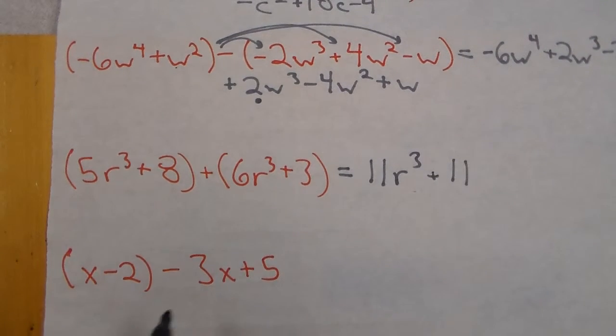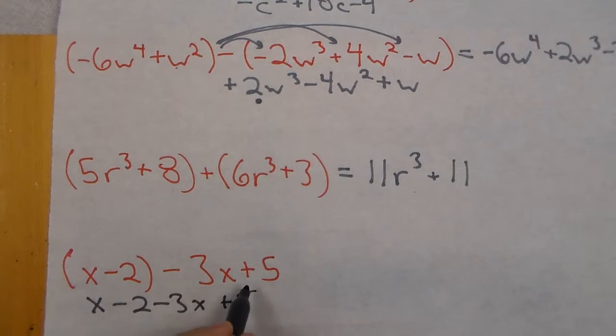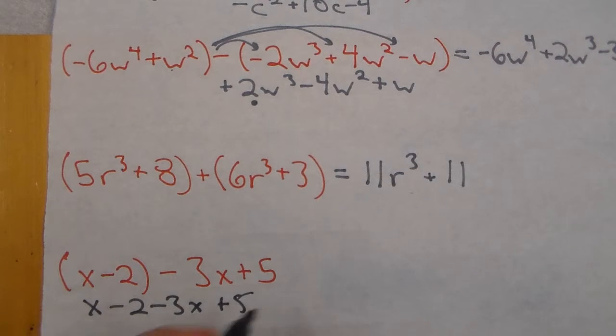For this one this is a different problem. If I had a parenthesis around the 3x minus 5 that's one thing but it's only on the 3x. So it's more like x minus 2 minus 3x plus 5. There's not a negative on the 5. So our like terms would be x and negative 3x which gives us negative 2x. And then negative 2 and 5 which give us a positive 3. So our answer would be negative 2x plus 3.